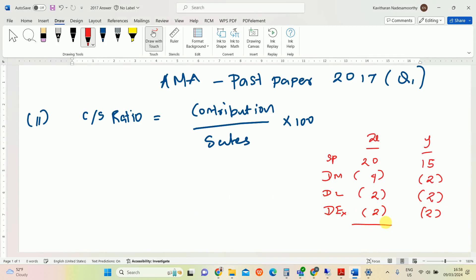So first, 20 minus 8 is 12 contribution per unit, and 15 minus 6 is 9, so contribution per unit 12 and 9. So we need to get the overall contribution. So contribution 12 for X and 9 for Y, and 9 for Y and divided by sales.